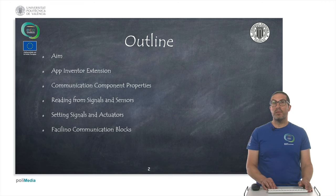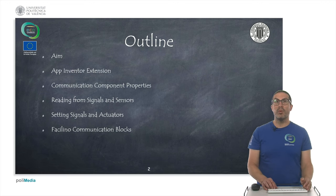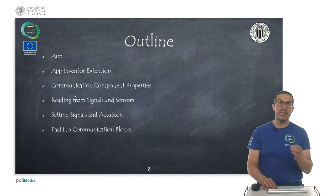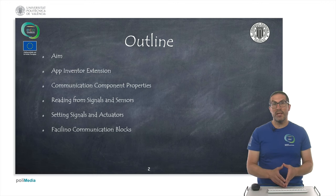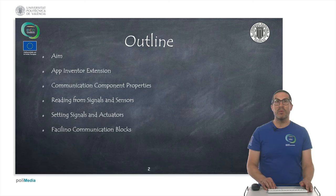This is the outline of the presentation. First I'm going to introduce the aim of our video and introduce the AppInventor that we have developed within the Ecothings project. We're also going to talk about communication component properties, how to read data from signals and sensors, how to set values to signals and actuators, and at the end I'll introduce the Facilino blocks used to collect information from the app and return back the required responses.